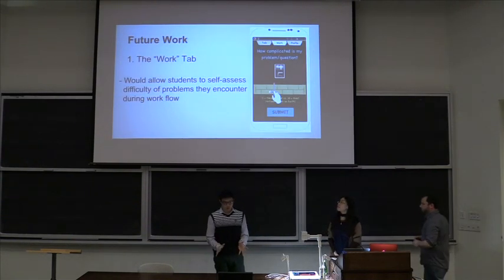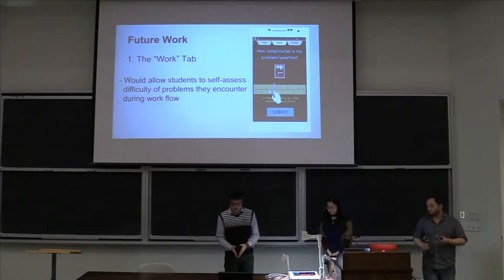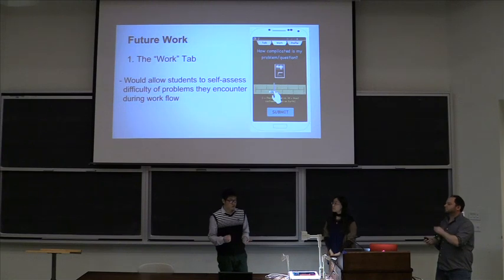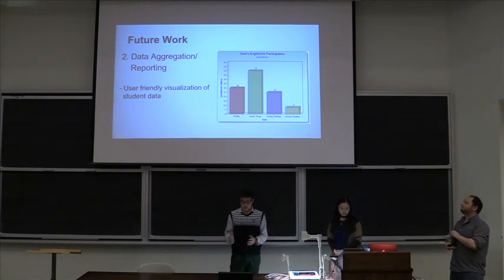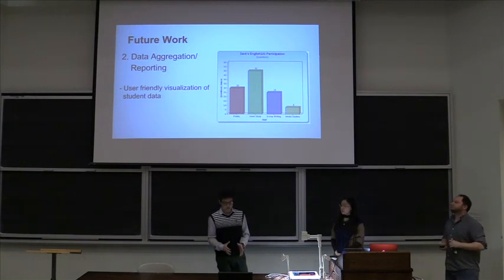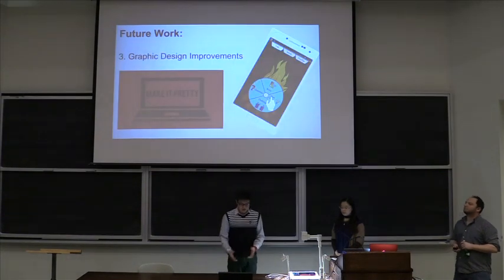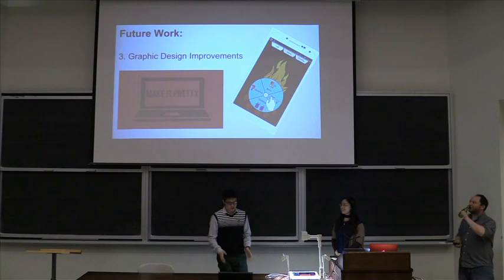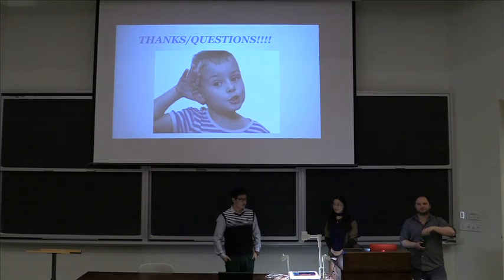Let's take a quick look at future work. The first piece is the work type feature, which includes initial design planning and allows students to self-assess problems while working, so the teacher can make strategic decisions about student order. Next is data aggregation and reporting — data already collected and organized on the server will be visualized so teachers can use it to inform future instruction and assessment. And last but not least, we should make it prettier. Thank you for your time, and look for Bataan in the Google Play Store soon.